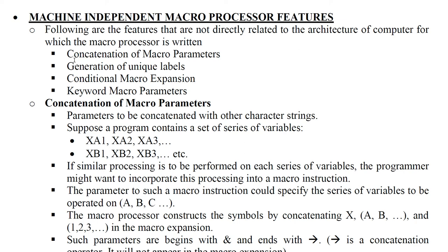In this video I am going to discuss machine independent macro processor features. There are four features: concatenation of macro parameters, generation of unique labels, conditional macro expansion, and keyword macro parameters.